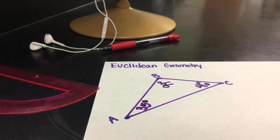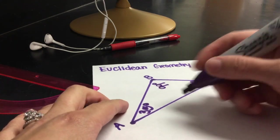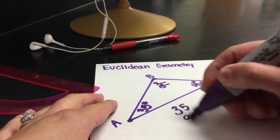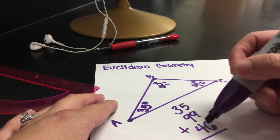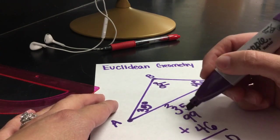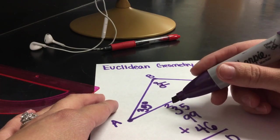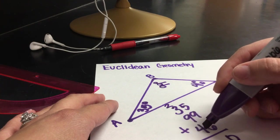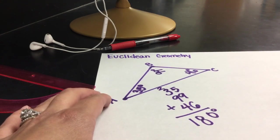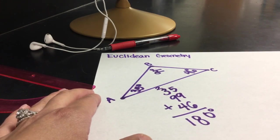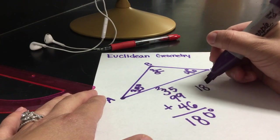So, I'm going to add these three numbers together. Whenever I add 35, 99, and 46, I get 180 degrees. So, when I'm looking at this triangle, I'm going to get 180 degrees.